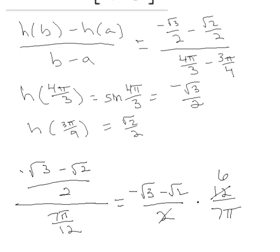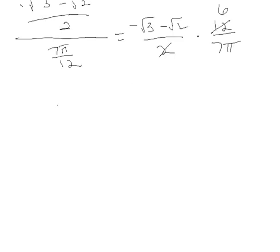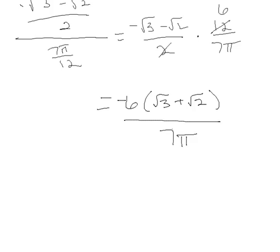And so you get 6 onto that, all of that. And you might want to put the negative 6 out front and then you can say square root of 3 plus square root of 2, because you want to do 6 times all of that over just 7π. Okay? Okay, thank you.